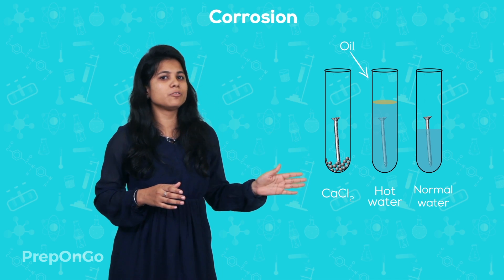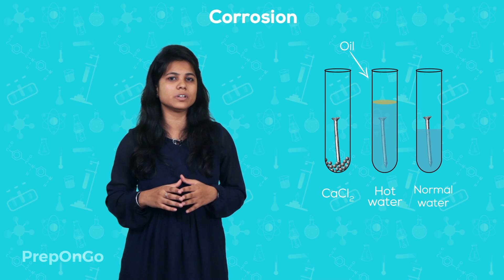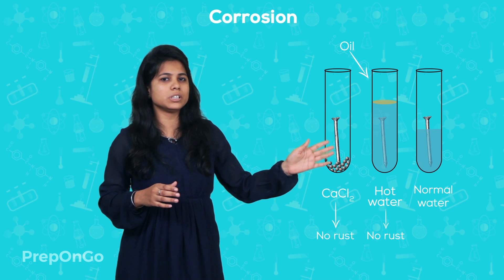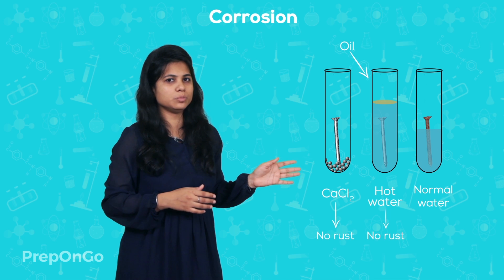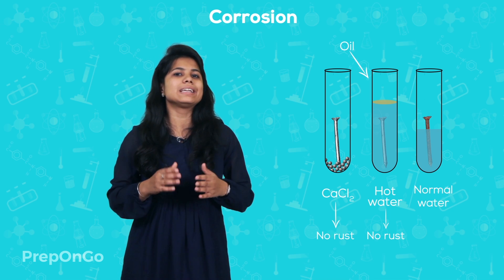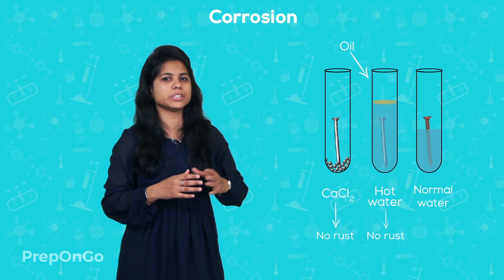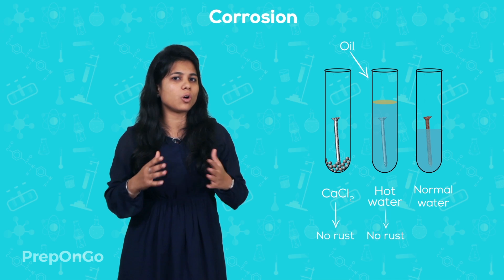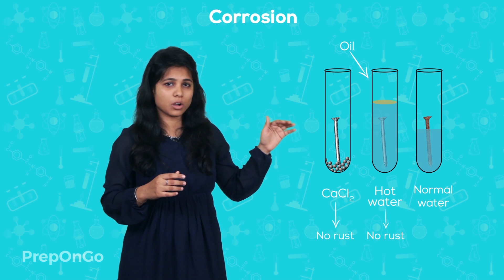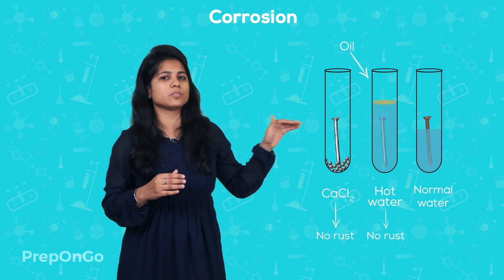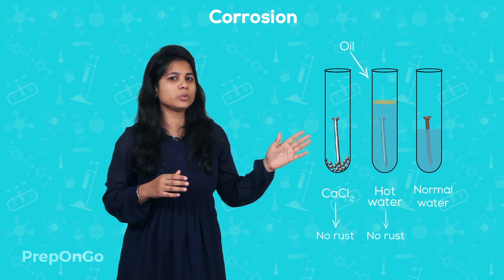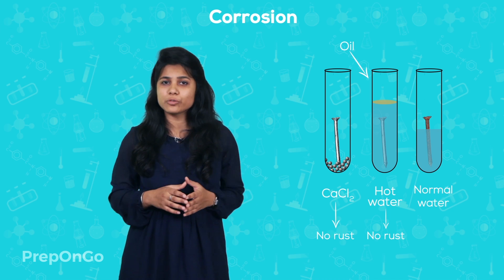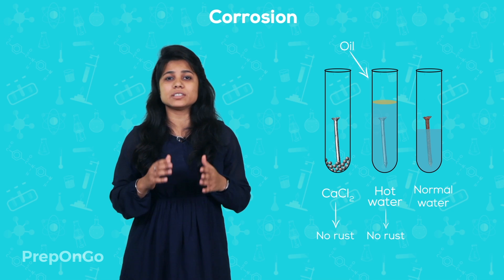Leave the setup for a few days. You will observe that the first two test tubes do not have iron rusted, while in the third test tube the iron nail is rusted. In the first test tube, the iron nail does not rust because calcium chloride absorbs all the moisture. In the second test tube, the iron nail does not rust because the hot water has lost all its oxygen and the surface is covered with oil which cuts off the air supply. In the third test tube, water and air are present in rich amounts, meaning it is rich in oxygen. So we conclude from this experiment that oxygen is essential for corrosion.